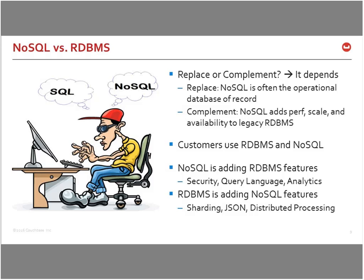eBay's listing service is a good complementary example: managed in relational, but they added NoSQL as a front end to handle search queries and scale. The application still calls the service; the service just uses a different persistence layer. What's true is that customers are using both relational and NoSQL within the same organization and sometimes the same application — I've yet to find a customer who uses only one.